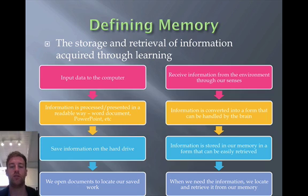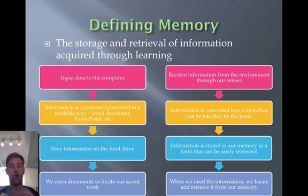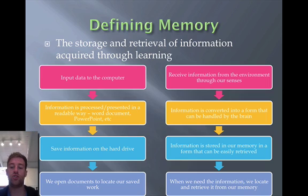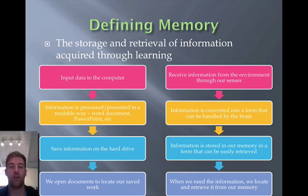On a very basic level, cognitive psychologists believe that information from the outside world comes in and we have to encode that memory and transform it so it makes sense to us. Then, if the brain attends to it, we can store it in memory. At any stage, if we've stored and encoded it correctly, we should be able to retrieve it — the same way that if we set up our folders correctly on a computer we should be able to retrieve the document. That's essentially the cognitive psychologist's theory of how memory works.